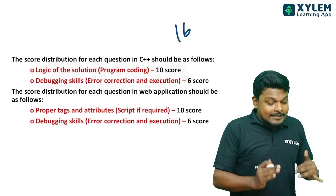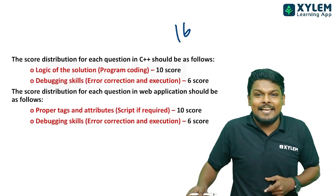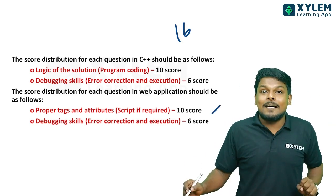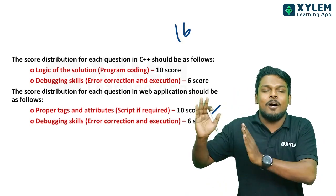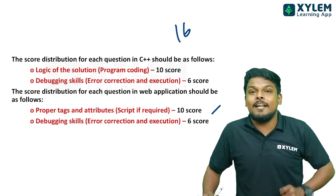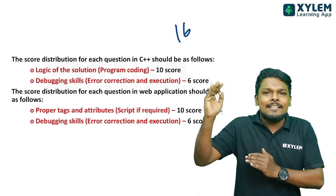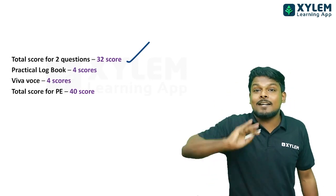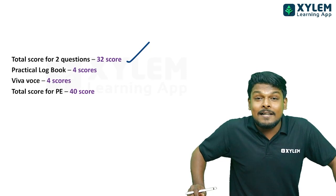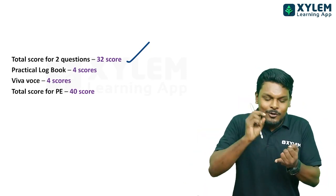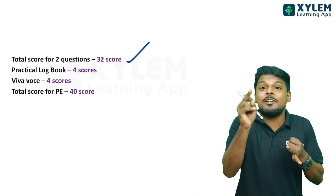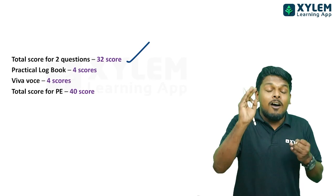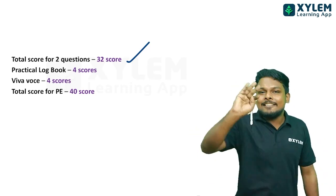If we write an HTML document and have written a template with correct tags, we will score 15 marks. We will write 8 marks for that portion. If you go to the lab, the neatness of the lab record and completion of programs are assessed. The teacher signs the lab record, and we have 4 marks for that.